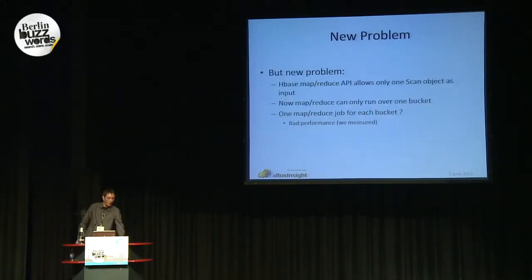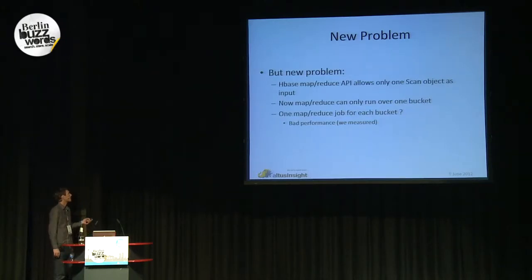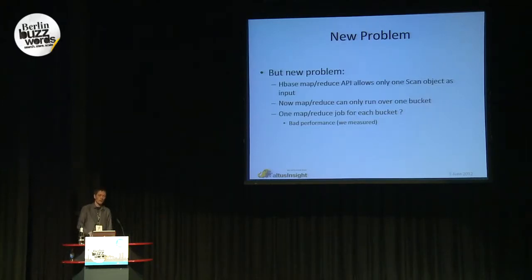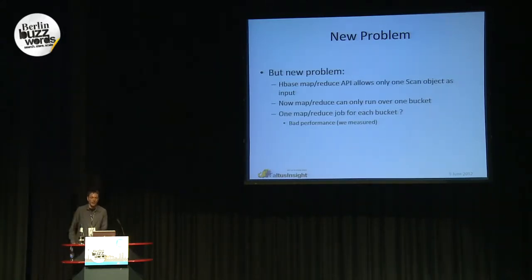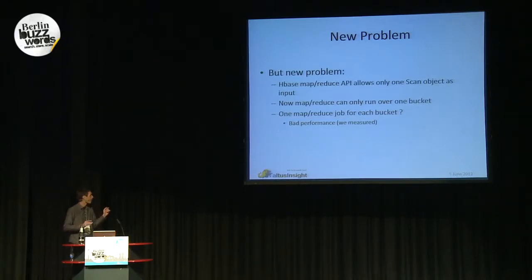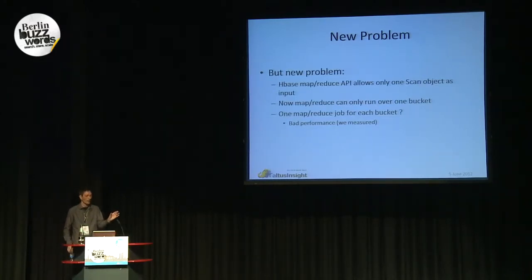While this is good for distributing the writes, it had a new problem. Right now, if you want to run a MapReduce analysis on an HBase table, it only allows for one scan object to serve as input for a MapReduce job. A scan object lets you select a certain range of your table, and with the current MapReduce API, you can only process one range of keys in a MapReduce job.